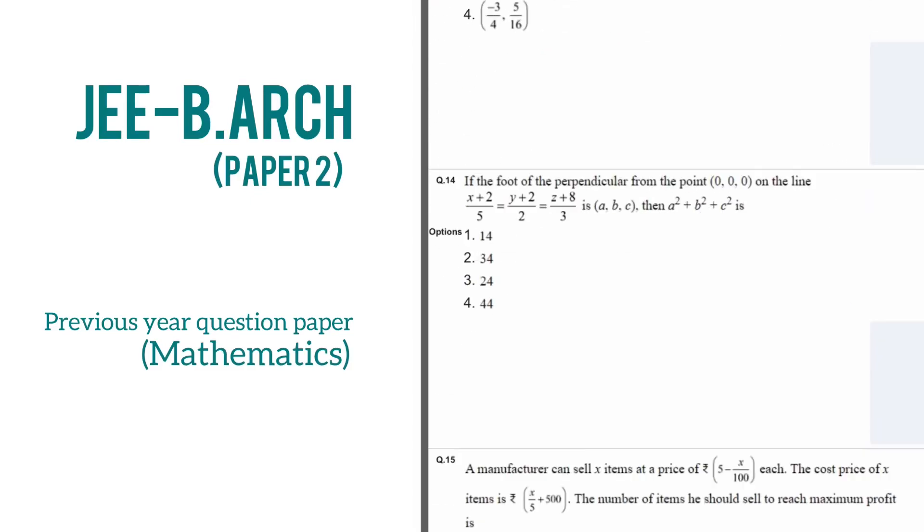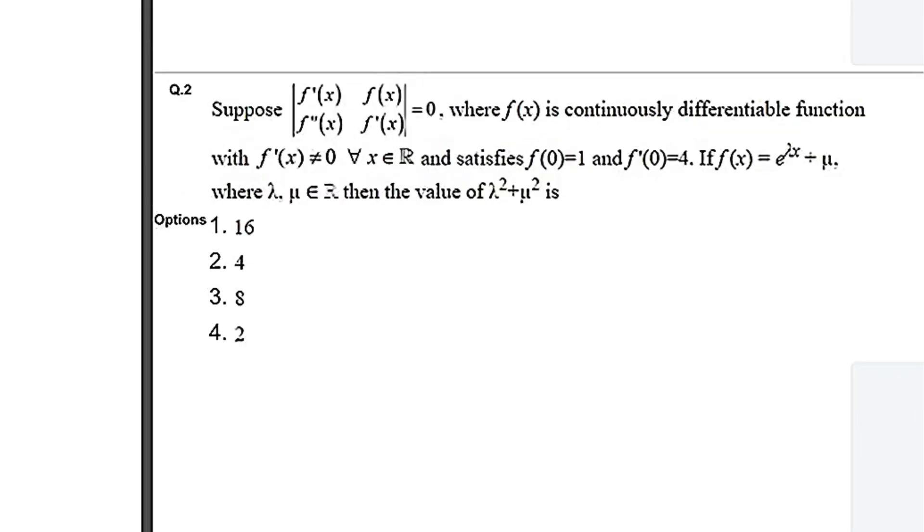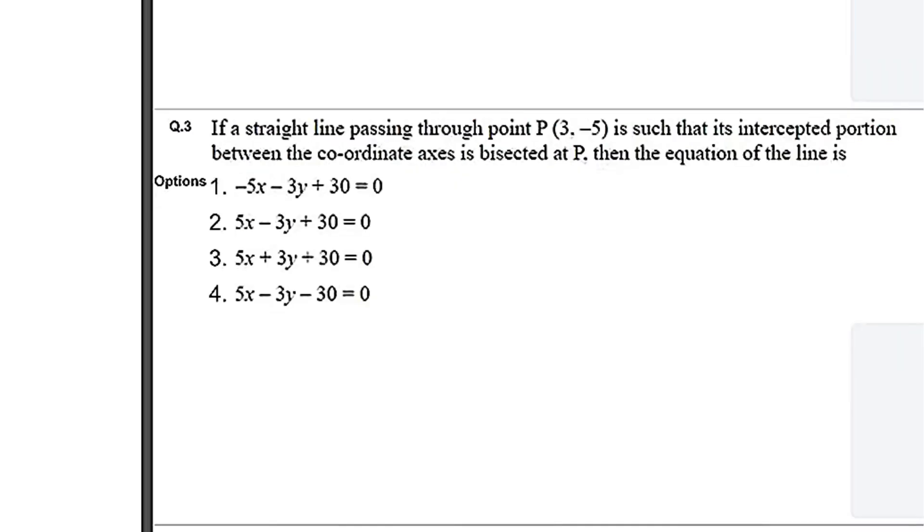In this video we are looking into GWEBH paper 2 previous year question paper, the mathematics part. The mathematics part is basically divided into two sections. The first one starts from question number 1 up till question number 20, that is the MCQ part. This part has negative marking, so look for it before answering. The next part starts from question number 21 to 30.